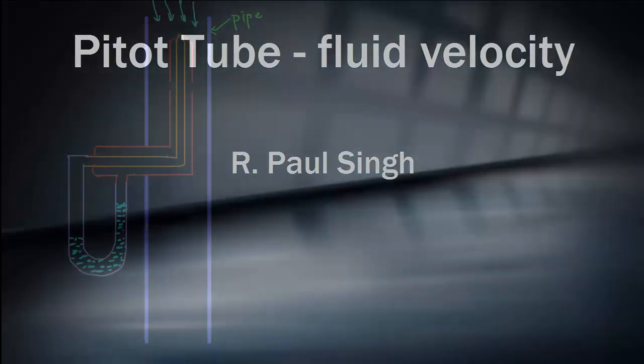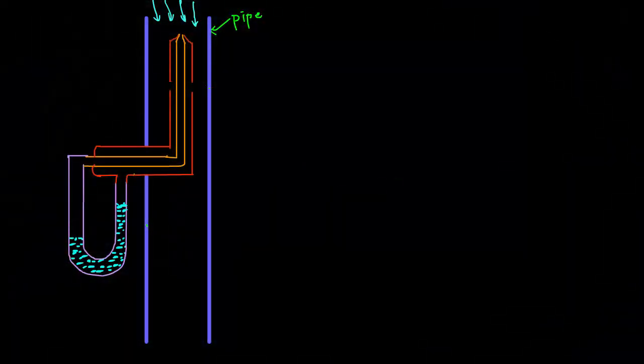In this tutorial we will look at how to use a Pitot tube connected with a manometer to measure fluid velocity in a pipe. Here in this diagram we see a pipe with a fluid flow, and we have a Pitot tube connected to a U-tube manometer.